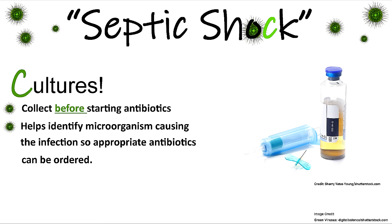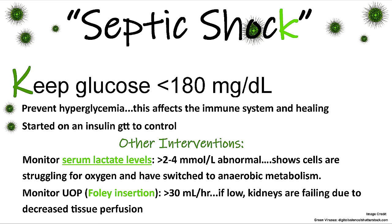C is for Cultures — these need to be collected before starting antibiotics, but do not delay antibiotic therapy. Cultures help identify the microorganism causing the infection so appropriate antibiotics can be ordered to target it. K is for Keep glucose less than 180 — we want to prevent hyperglycemia because it affects the immune system and how it can heal. The patient may be started on an insulin drip to control blood sugars.